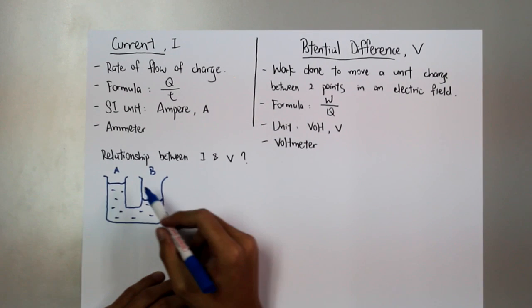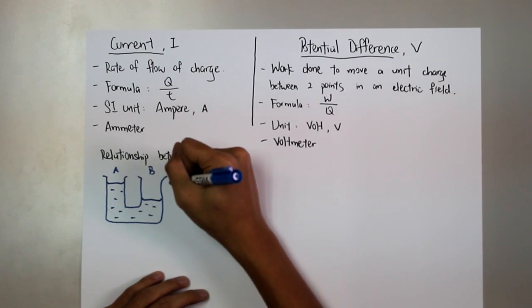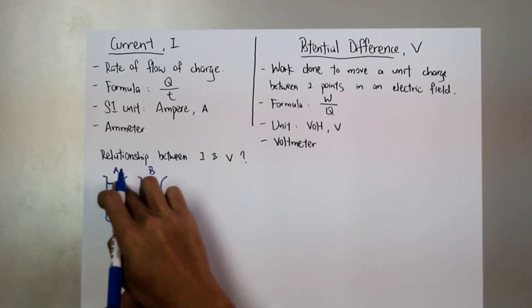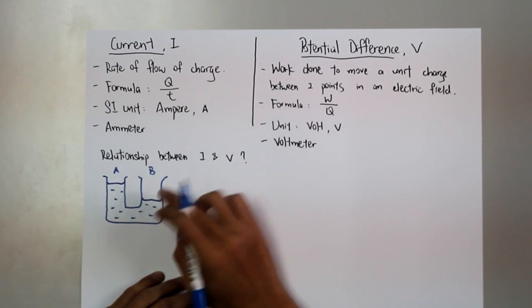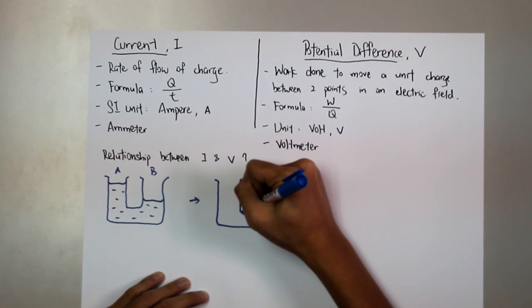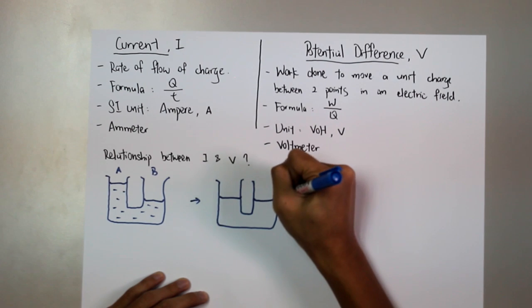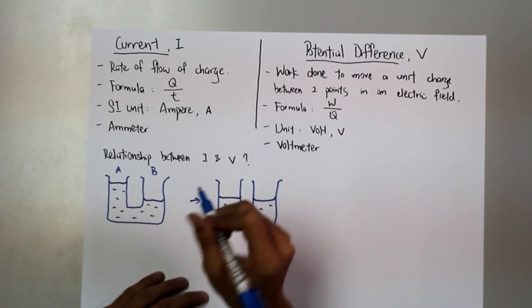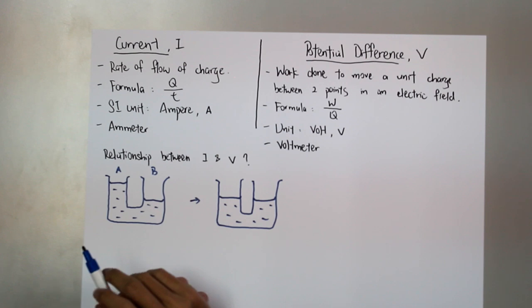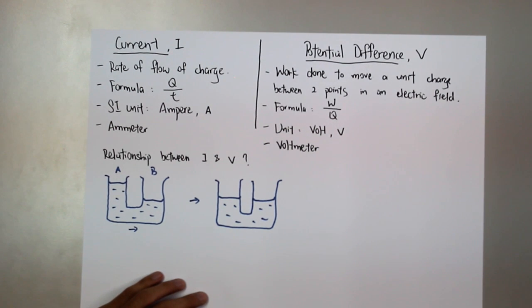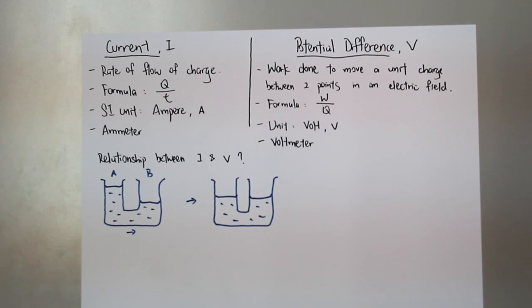The difference in the water level here creates a potential difference, a potential difference in potential. And the potential difference drives the water from this side to the other side. And eventually, the water level becomes equal. And we can say that the greater the difference between the water level, the higher the rate of flow of water.